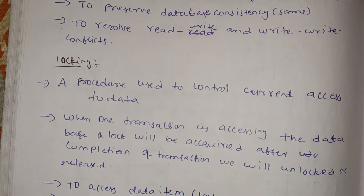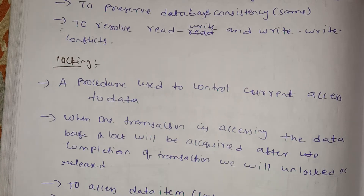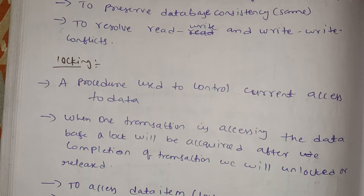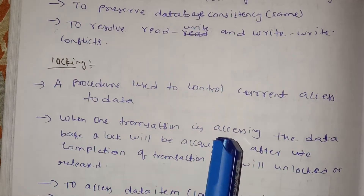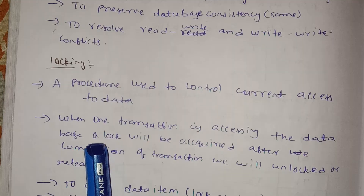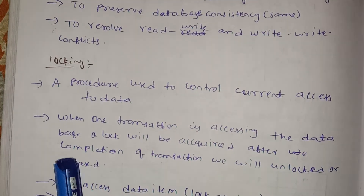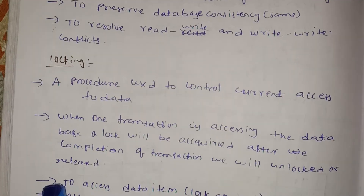We will lock the access. We will lock the transaction. Then we will unlock the transaction. When one transaction is accessing the database, a lock will be acquired. After completion of the transaction, we can unlock and release the lock.